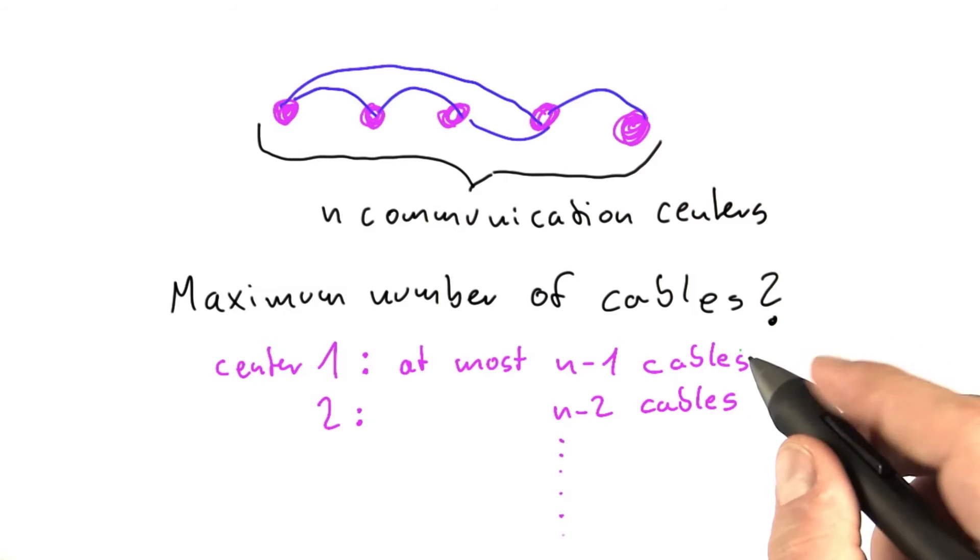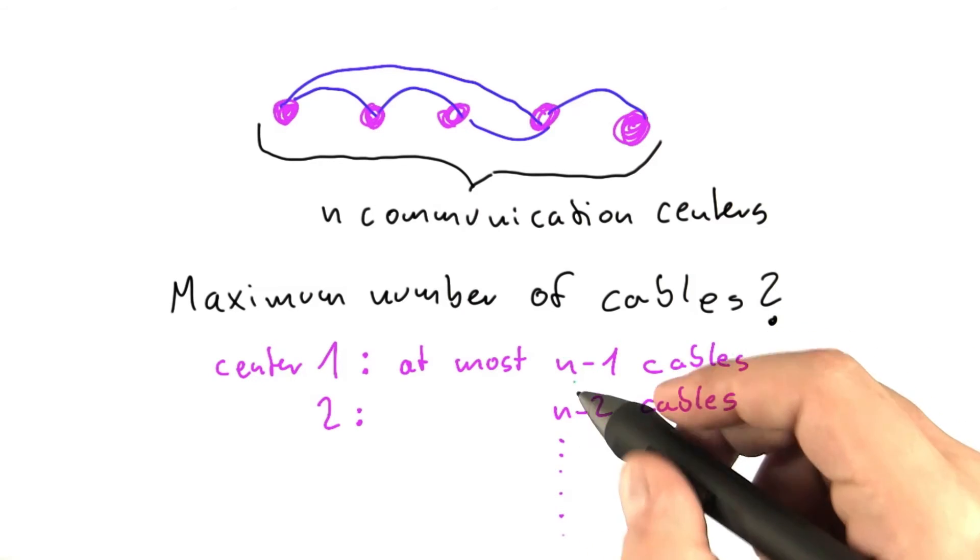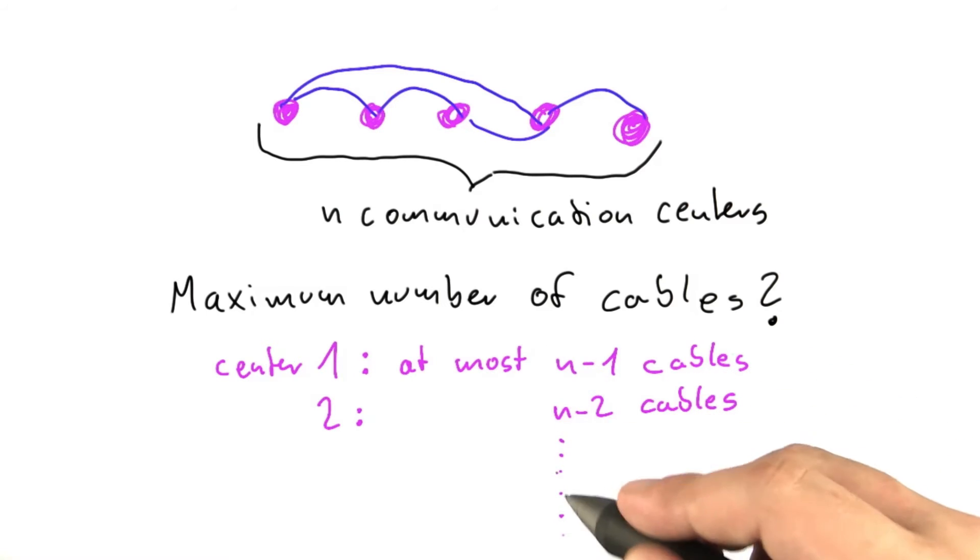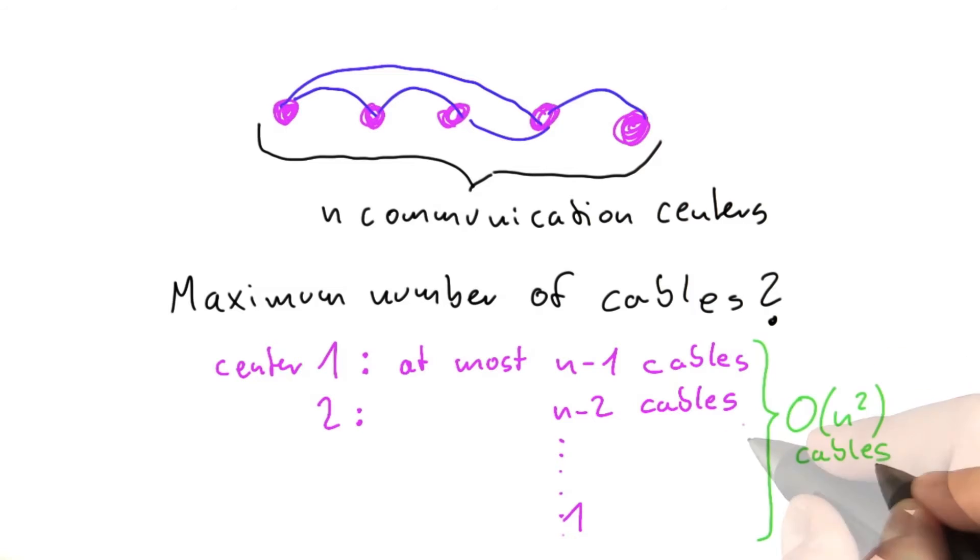And this goes on and on and on. And from the algorithm that you analyzed before when we were discussing O notation, you already know that if you do the sum of n-1, n-2, n-3, and so on until you get down to 1, then that is O(n^2).